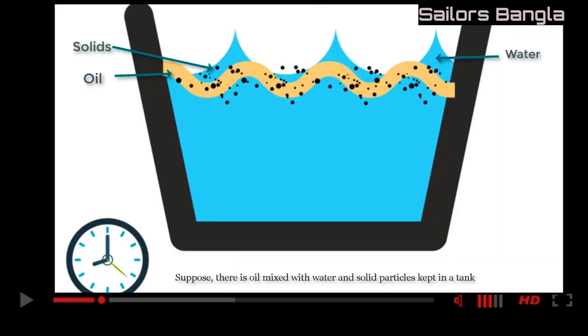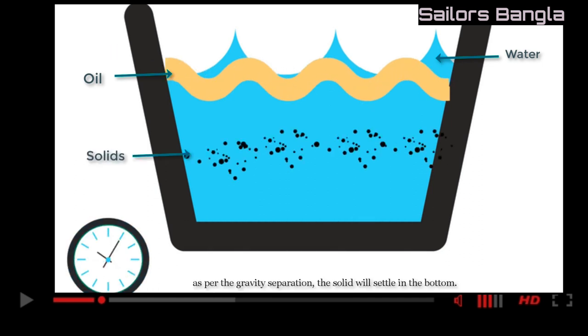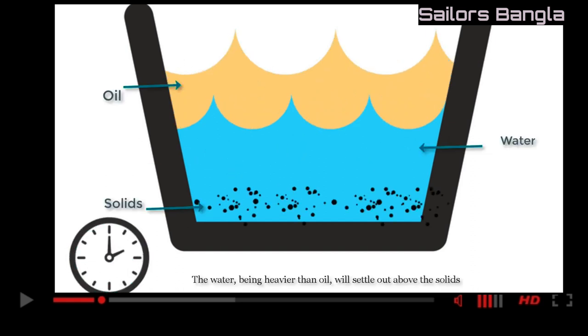Suppose there is oil mixed with water and solid particles kept in a tank. As per the gravity separation, the solids will settle in the bottom. The water, being heavier than oil, will settle above the solids. The oil, which is the lighter liquid, will settle on the top.